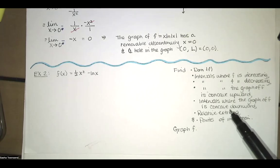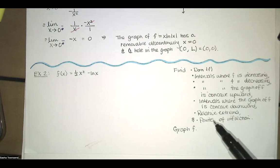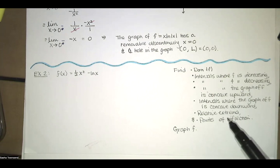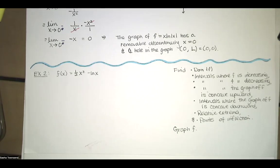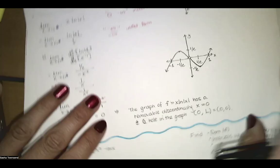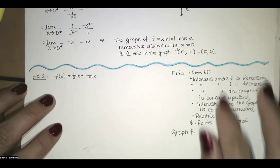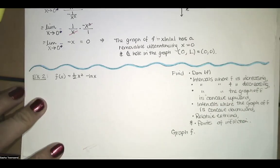Usually I use the first derivative test to find the relative extrema, and then I confirm my results using the second derivative test. Then we also want to find any points of inflection — those are ordered pairs where the graph changes from concave upward to concave downward or concave downward to concave upward. And then we'll graph f.